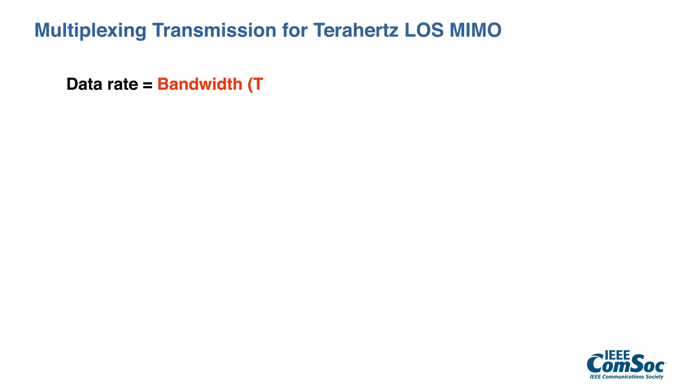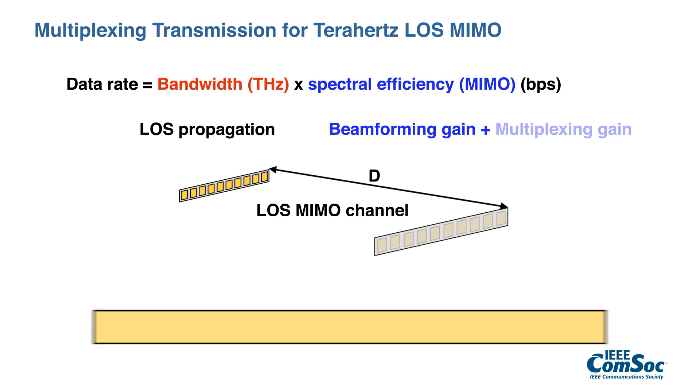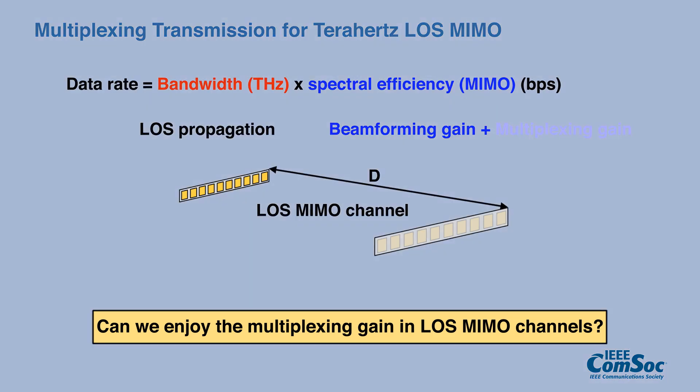Conventional wisdom in lower frequency bands says the multiplexing gain is infeasible under line-of-sight channel conditions. This is because multipath is the major source that allows multiplexing transmission in MIMO channels. However, as frequency goes up, the multiplexing effect rarely happens. So the natural question is: can we still enjoy multiplexing gain in line-of-sight MIMO channels?